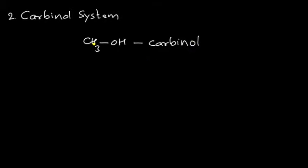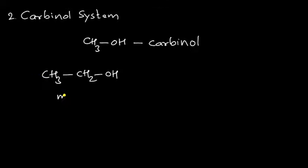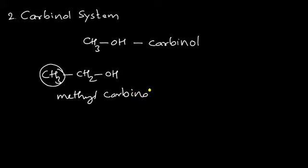If we replace one hydrogen in carbinol by a methyl group, it becomes CH₃CH₂OH. The CH-OH part is still the carbinol unit, but one hydrogen is replaced by a CH₃ group. Therefore this is called methyl carbinol.